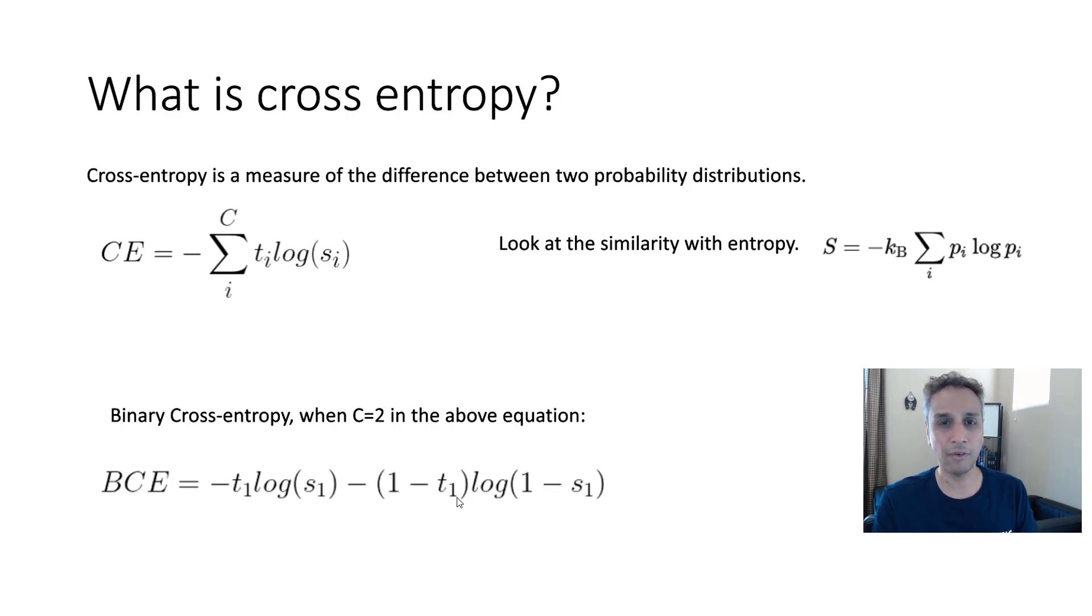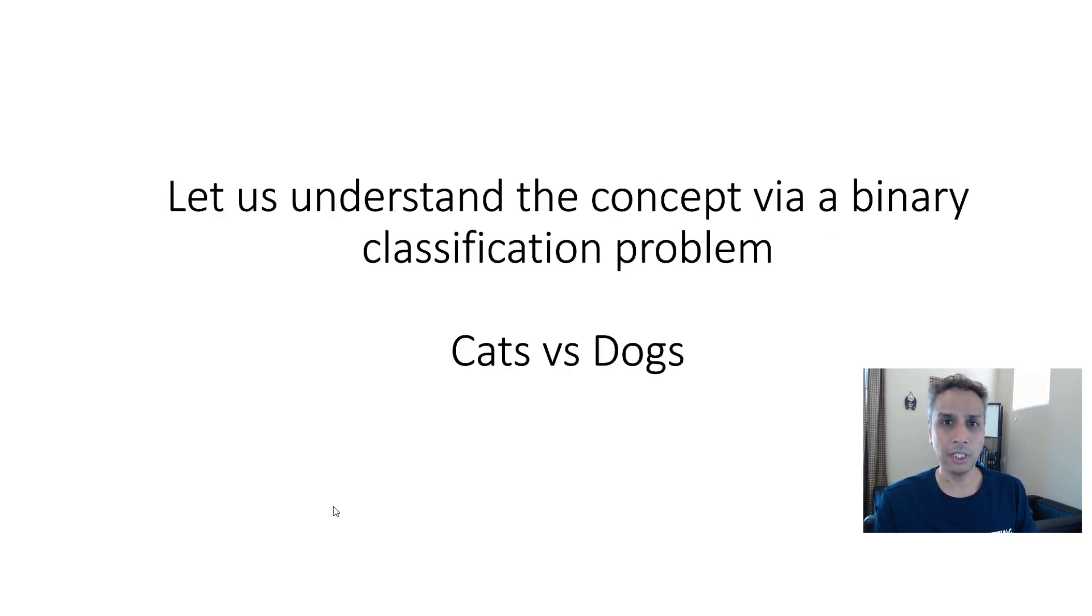Binary cross entropy basically is take your cross entropy and put your C equals to 2. Number of classes equals 2, that's our binary. Then you expand this. Then this is T1 log S1 and T2 log S2. If it is binary, then if the first one has a probability of S, the second one is 1 minus S. That's exactly where you get this. So this is binary cross entropy.